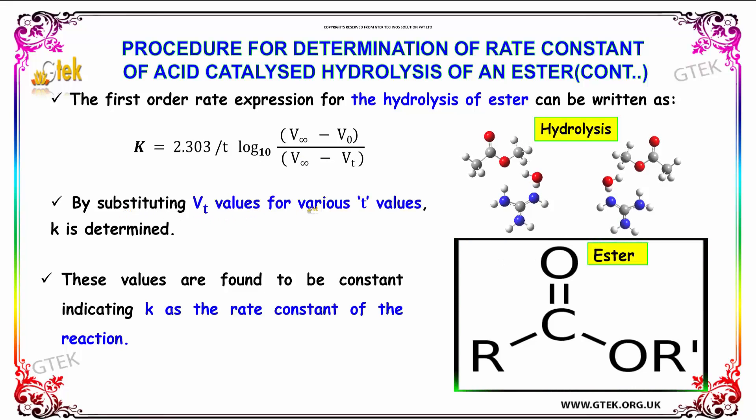By substituting Vₜ values for various t values, k is determined. These values are found to be constant, indicating k as the rate constant of the reaction.